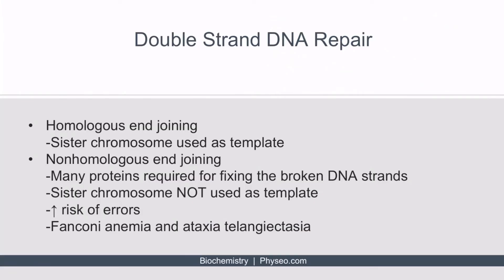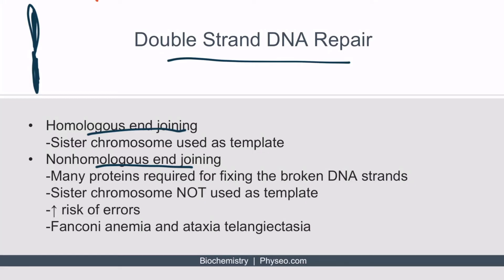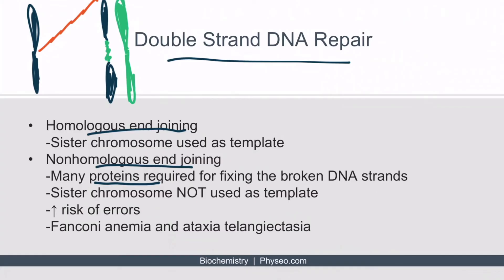The three mechanisms just discussed were all types of single-strand DNA repair. Double-strand DNA repair has two subtypes: homologous end joining and non-homologous end joining. In homologous end joining, the sister chromosome is used as a template to repair the double-stranded break — for example, after exposure to ionizing radiation. In non-homologous end joining, proteins are used to fix the broken DNA strands rather than the sister chromosome. This type is more prone to errors, and defects in this mechanism are associated with Fanconi anemia and Ataxia telangiectasia.